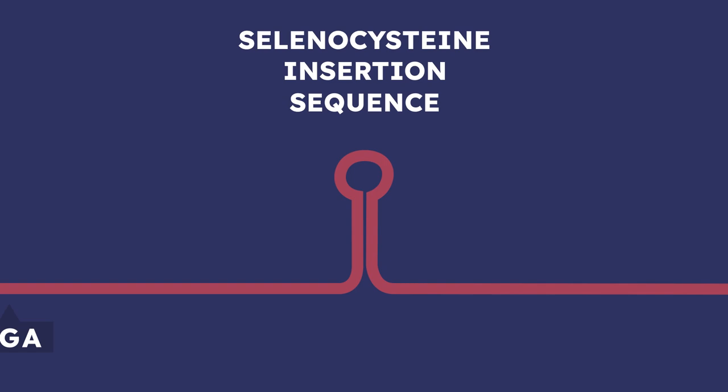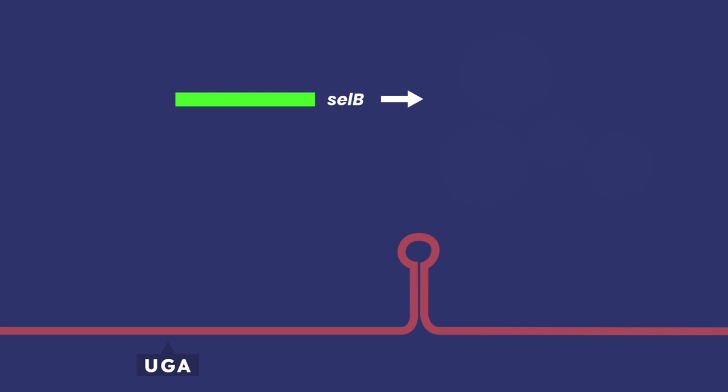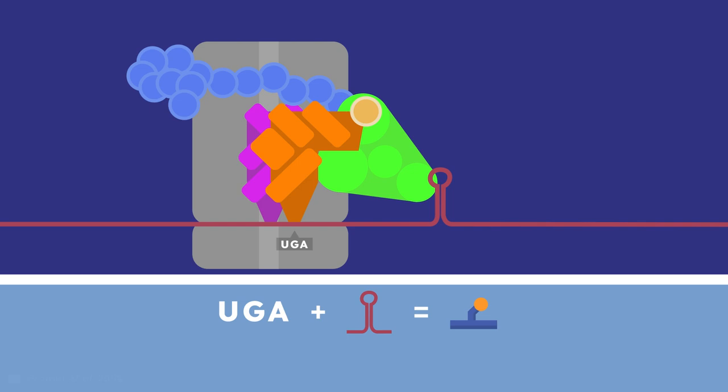Remember selB? It turns out selB is for a special elongation factor, meaning it helps the protein grow, and it interacts with the tRNA and the SECIS element. Essentially, if you need selenocysteine, there will be a SECIS. If there's no SECIS, the UGA means stop.